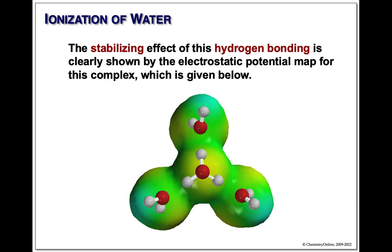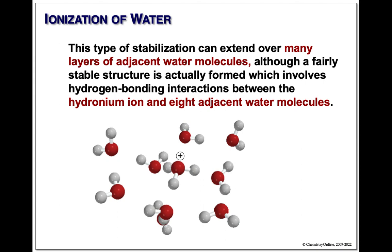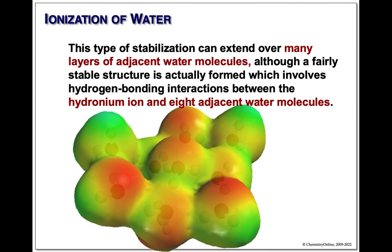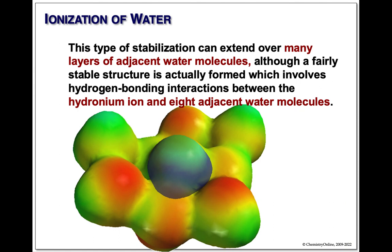Water doesn't travel in groups of three or four — it's more like eight, ten, or twelve. So let's take a hydronium and surround it by eight adjacent waters and calculate the full electrostatic potential map. Once we do the entire complex, not only is the blue gone, but the oxygen is actually very nicely red. Water is just amazing at stabilizing hydronium ions, and that's why they exist at such high concentrations — 10⁻⁷ molar, which is actually pretty high.